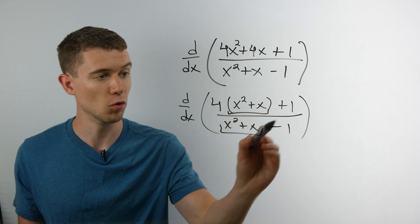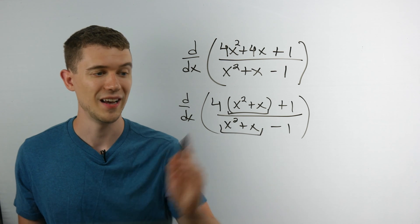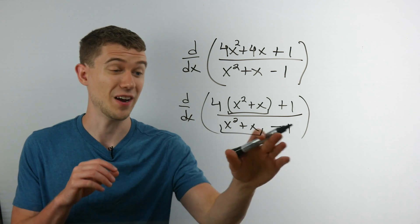Here my a will be 4, my b will be 1, my c will be 1, and my d will be 1. In fact negative 1.